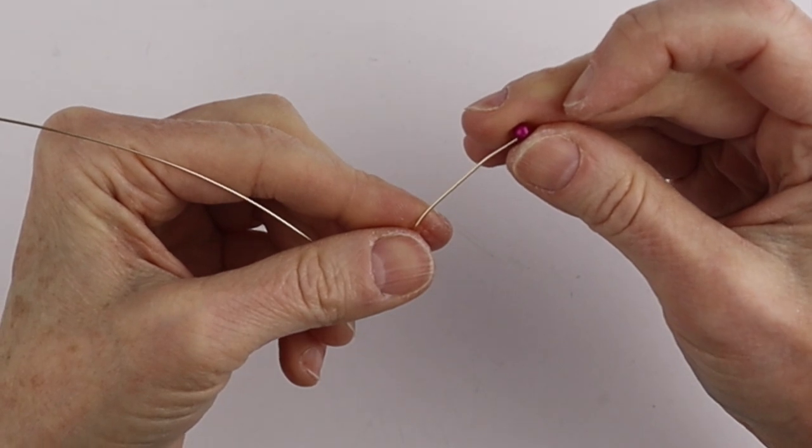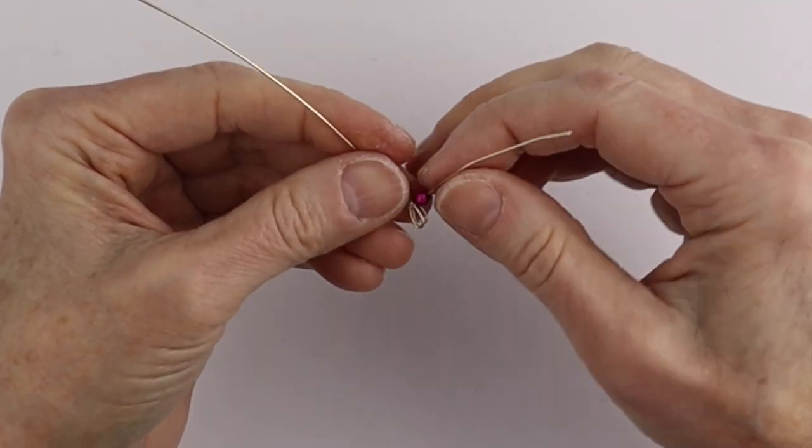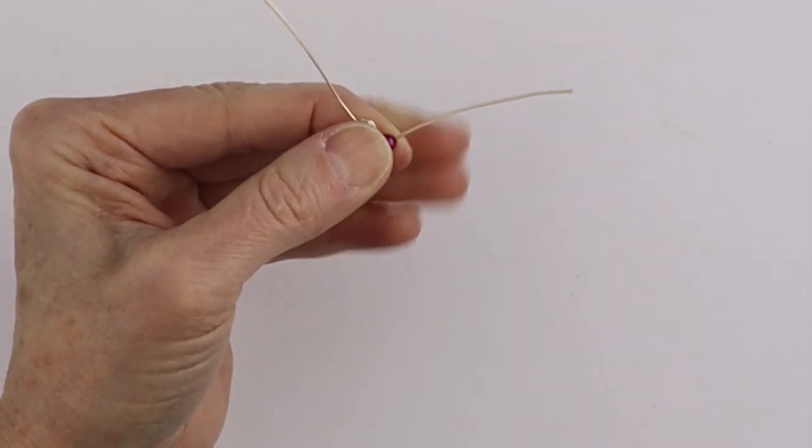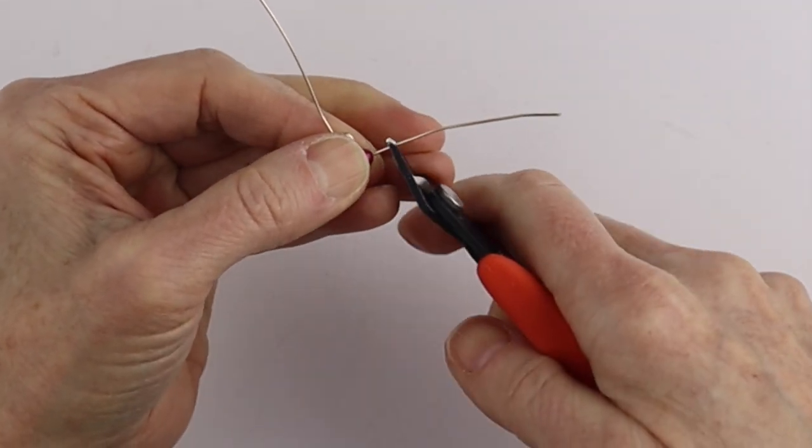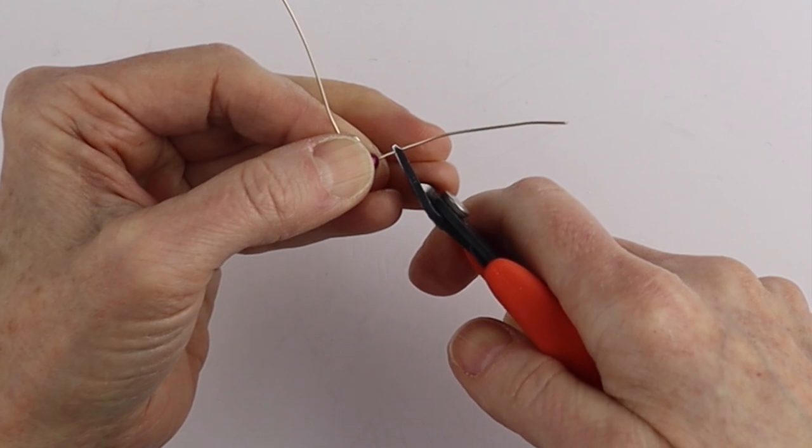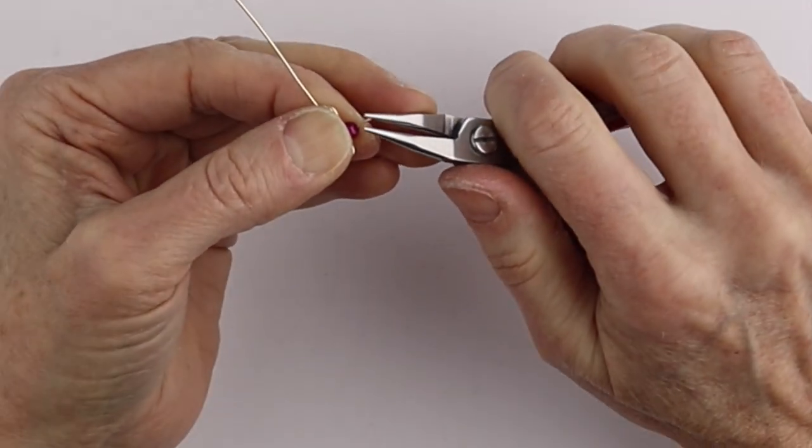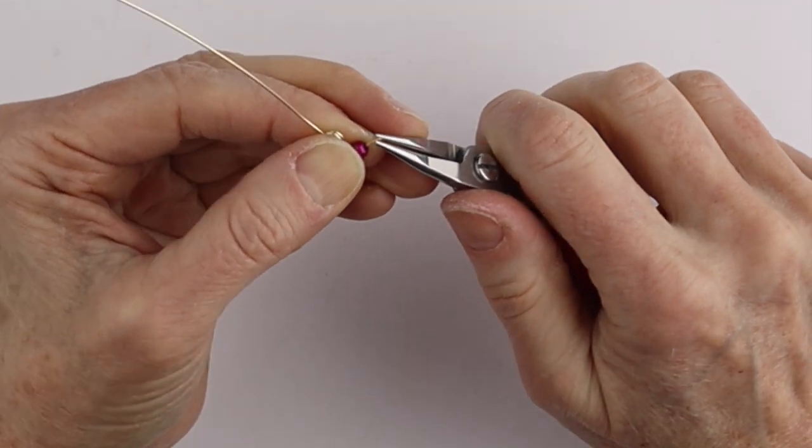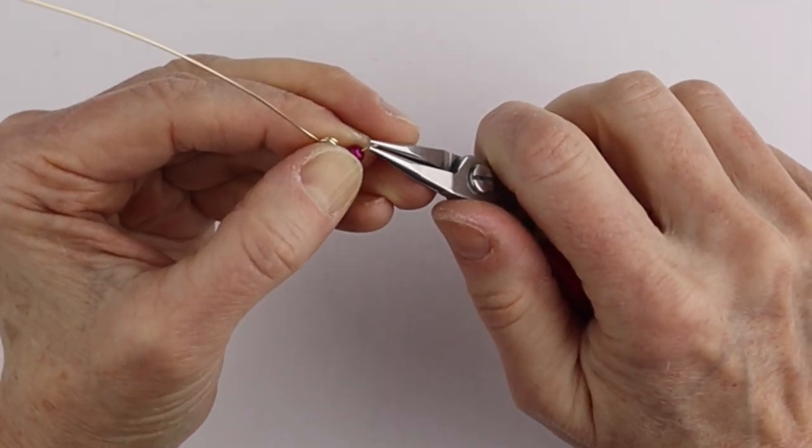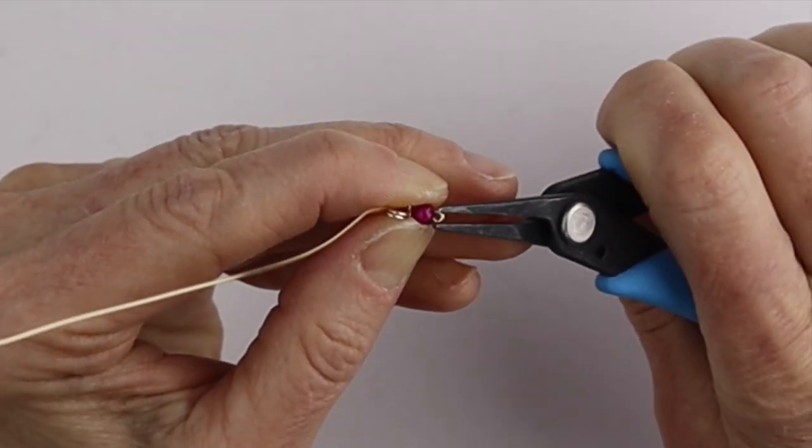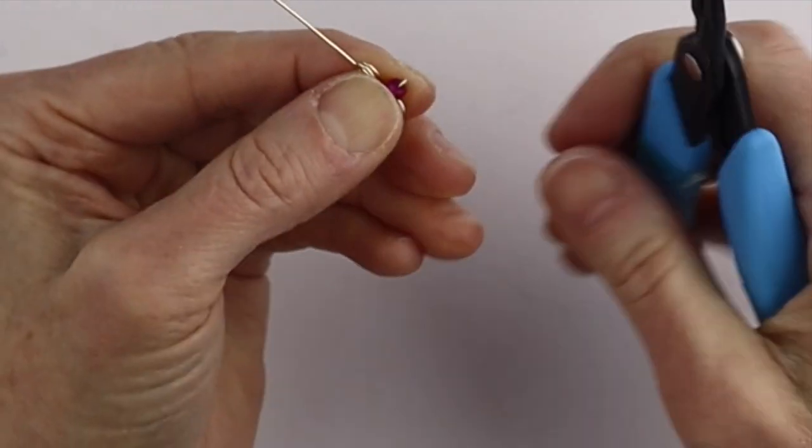And we're just going to bend that straight up. So now we'll just put one of the beads on there and we need it to stay in place. So we're just going to cut this quite short, about an eighth of an inch. And we're going to take this one, bend it back and around.